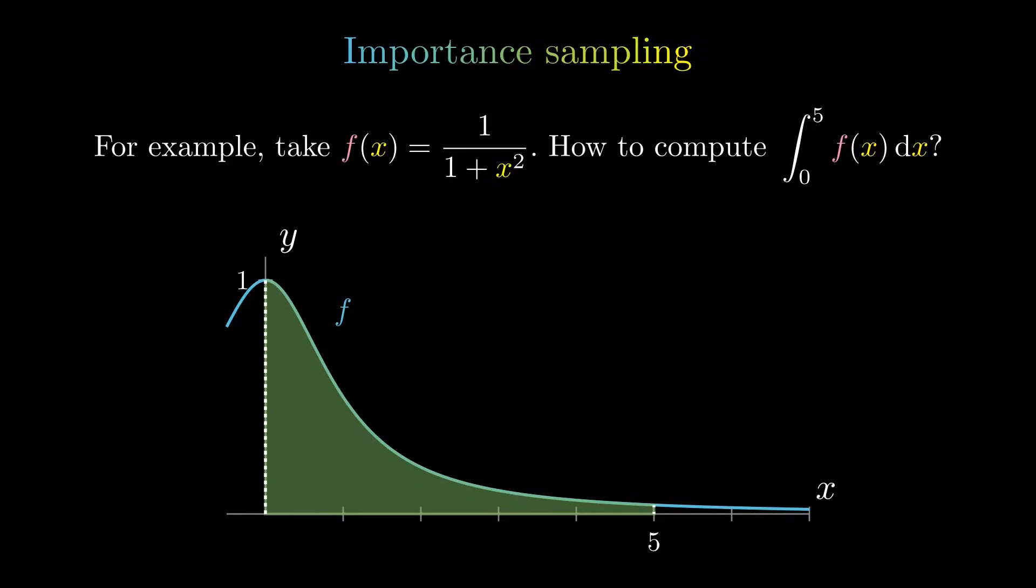We can take as distribution the truncated exponential whose density function we plot now. It is a good choice because it has a similar behavior to the absolute value of F, and hence it will reduce the variance of our sampling random variable.